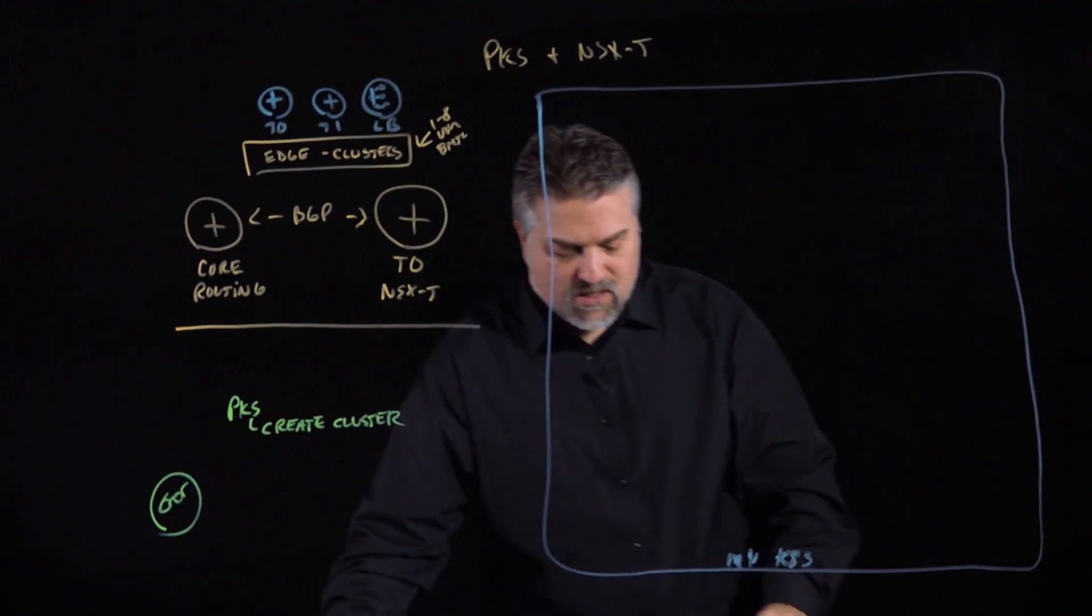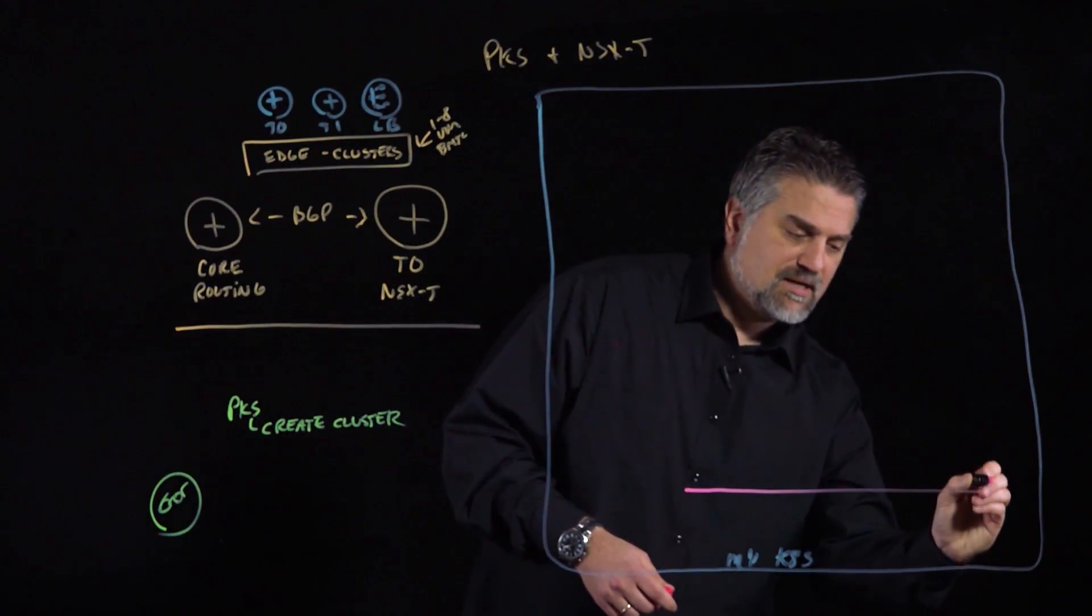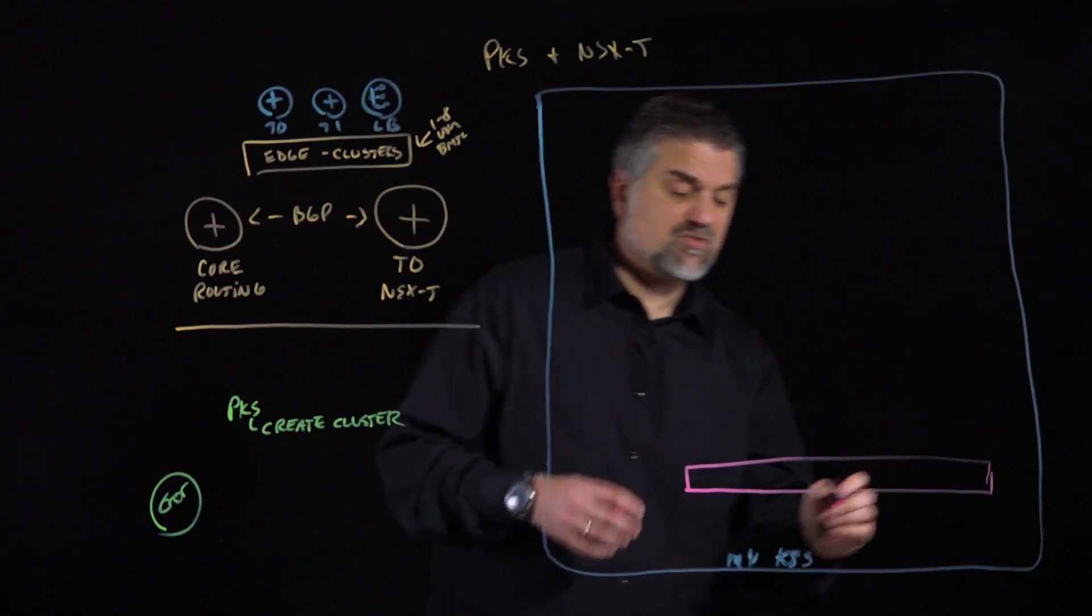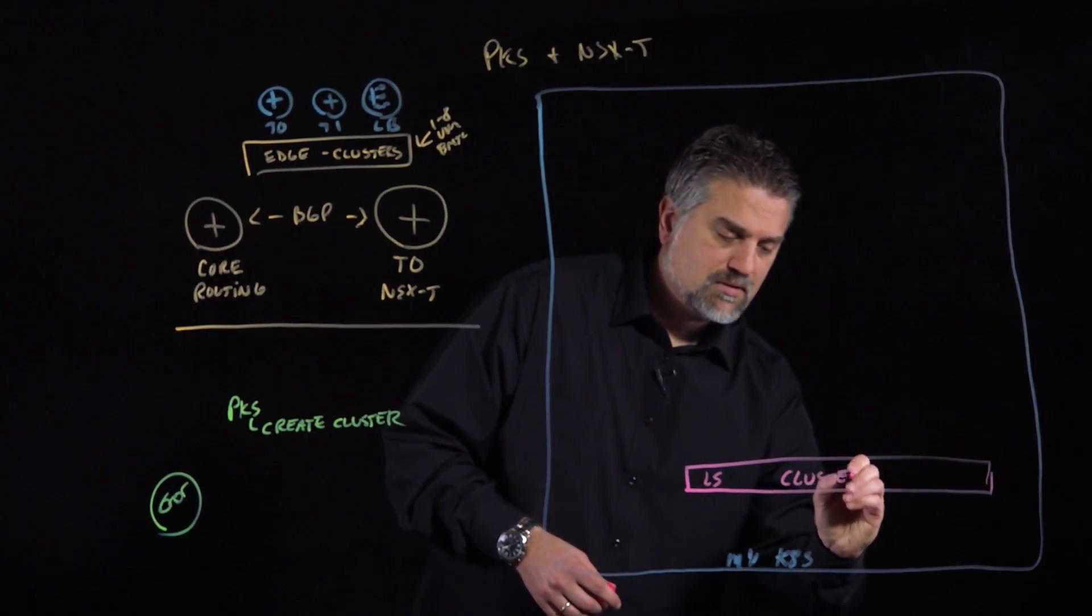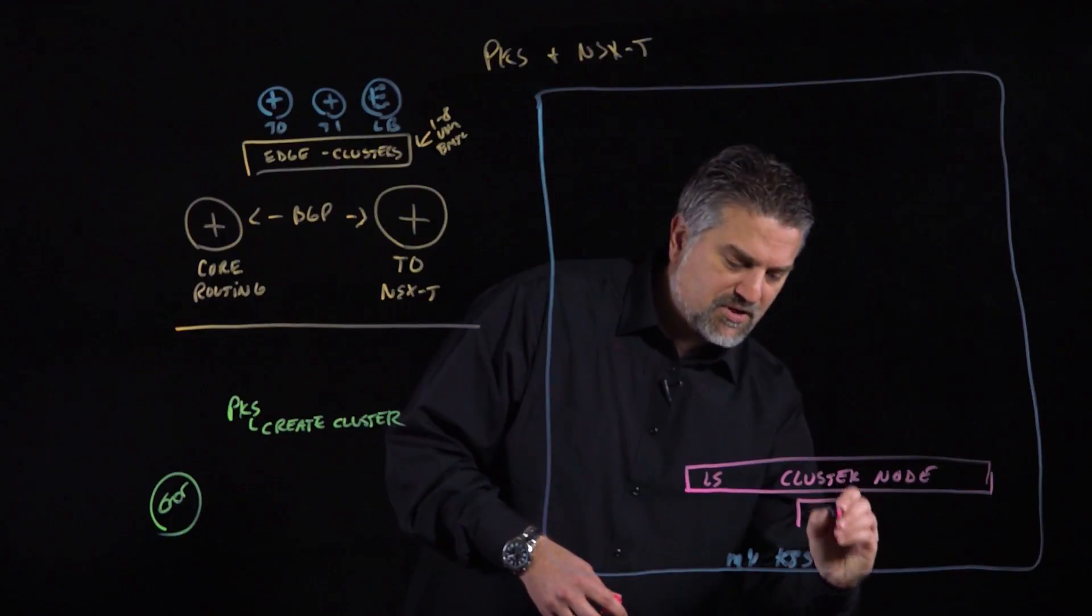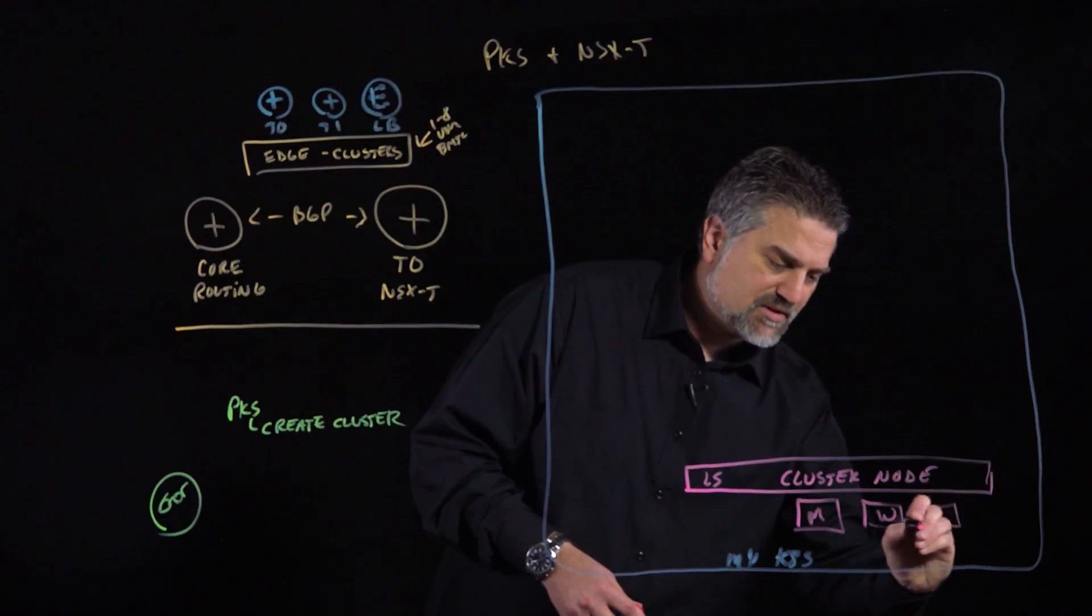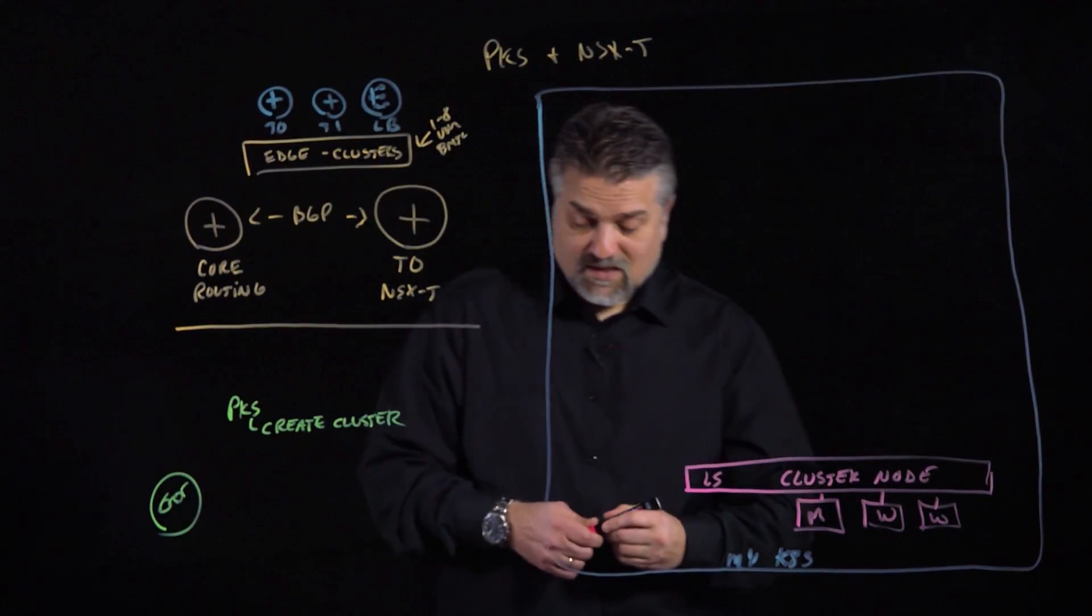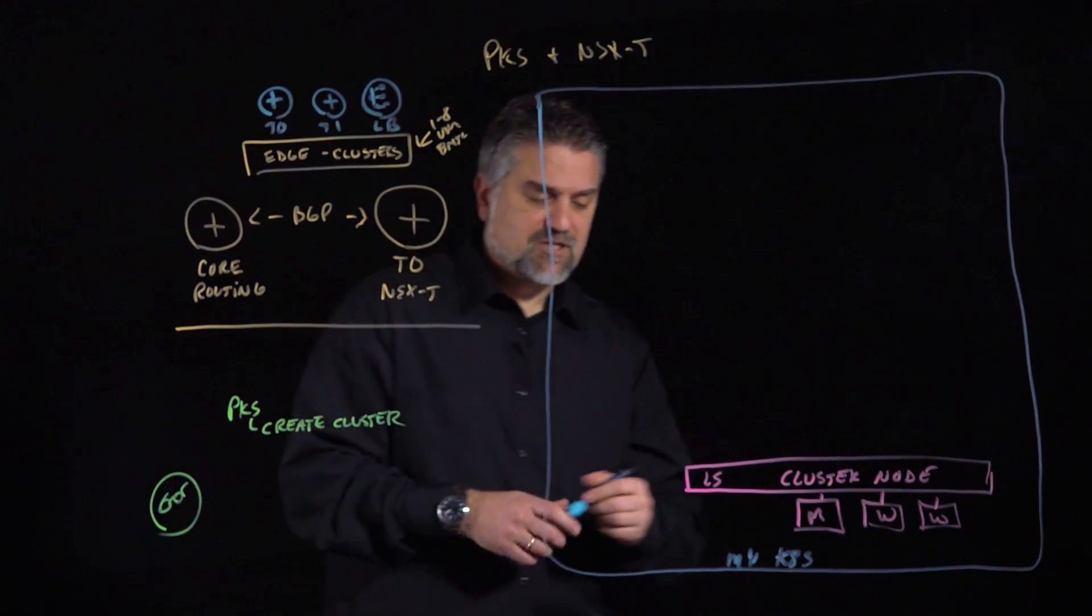We'll just call this MyK8s for Kubernetes. When that cluster is created, one of the first things that gets done is we get a logical switch that gets created by PKS, which is an NSX-T construct. We just use LS for that, and this is going to be for our cluster nodes. In this cluster, we'll have three nodes to keep it simple. We'll have a master node and two worker nodes in this cluster, and they're all going to be connected to this logical switch.